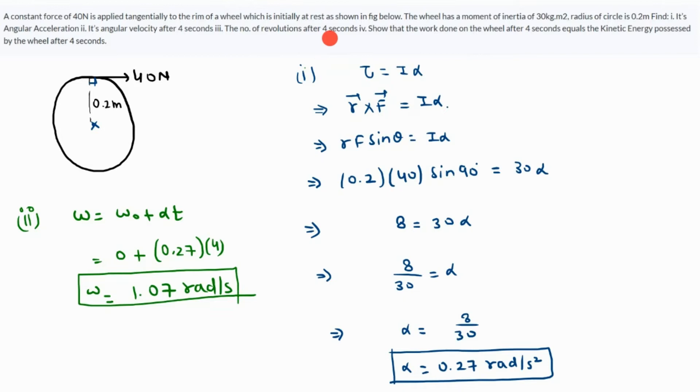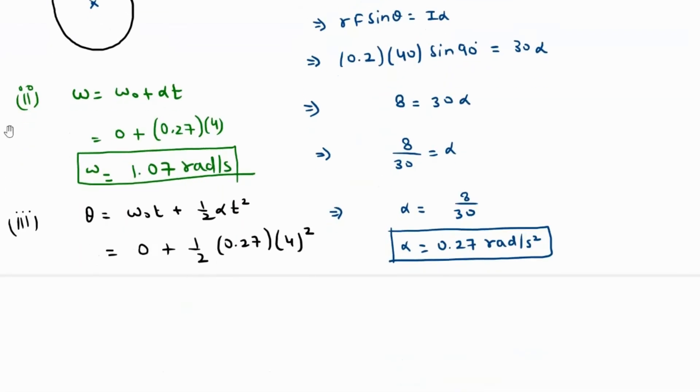The next part - number of revolutions after 4 seconds. Again, we can use the equations of motion, but this time we use the second equation of motion: θ = ω₀t + ½αt². Initial angular velocity is 0, α is 0.27, and time is 4 seconds.